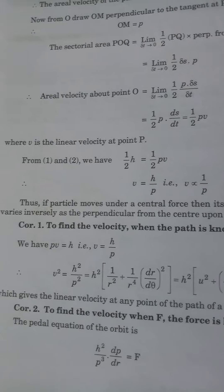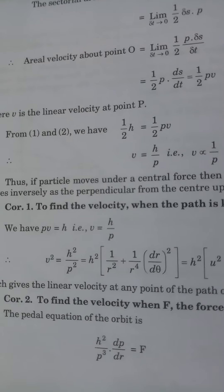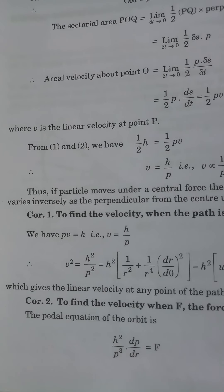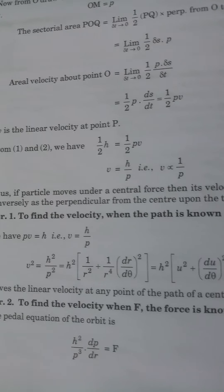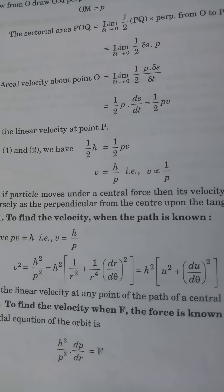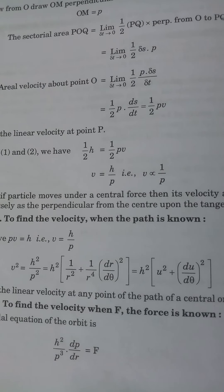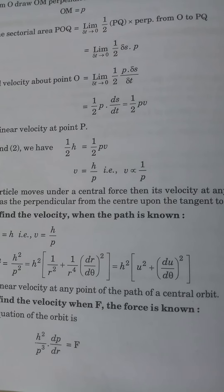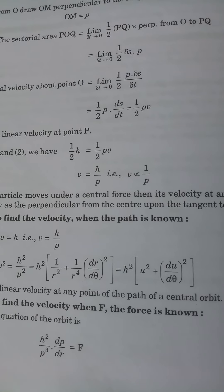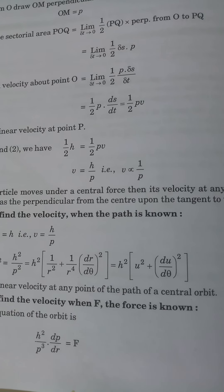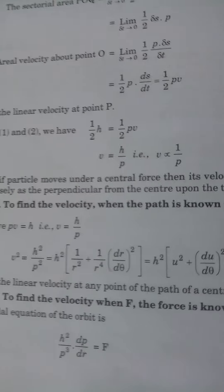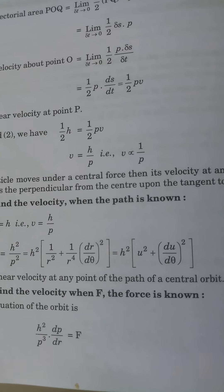Corollary 1 — To find the velocity when the path is known: We have p·v = h, that is v = h/p. Therefore v² = h²/p². Using the standard result 1/p² = u² + (du/dθ)², this gives v² = h²[u² + (du/dθ)²], which gives the linear velocity at any point of the path of a central orbit.